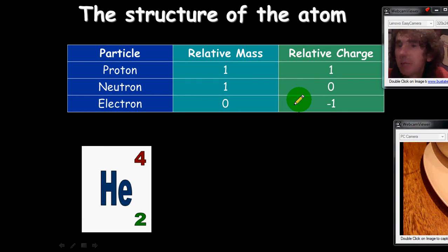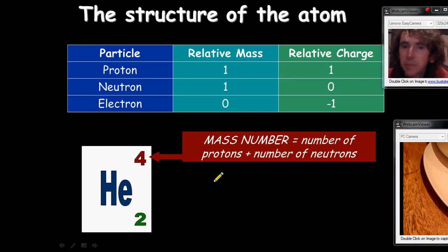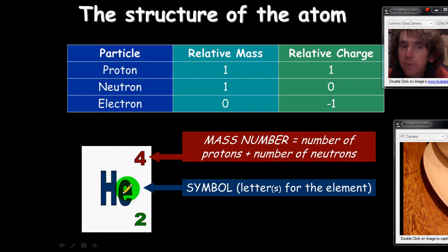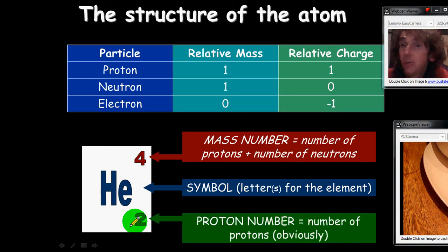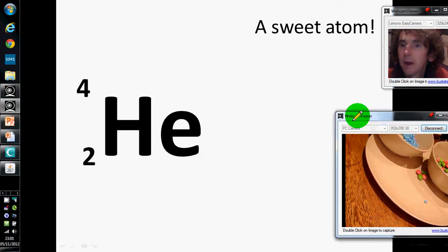Now, obviously, most atoms contain quite a lot of protons and neutrons. Here's one example. Helium has a total of 4 protons and neutrons. So we give it a mass number of 4. That's the top number. Obviously, you've got a symbol for it, so you can find it in the periodic table. And this number down here, 2, represents the number of protons. We call it the proton number.